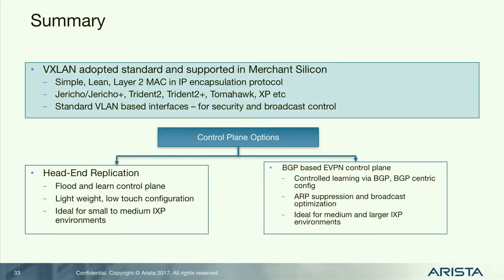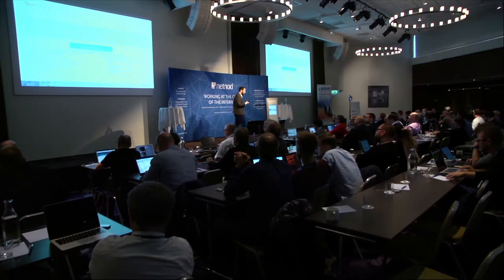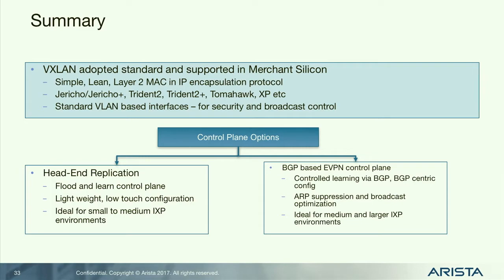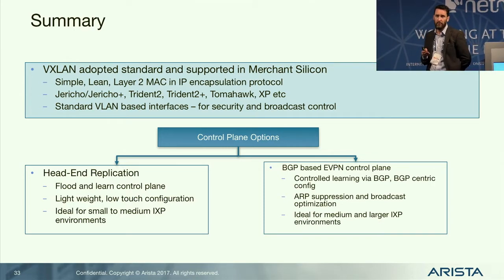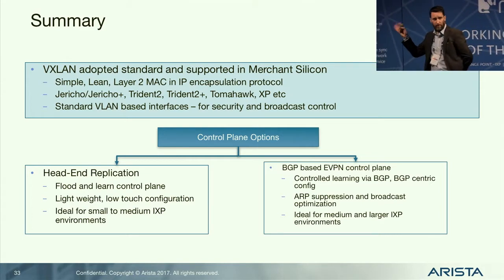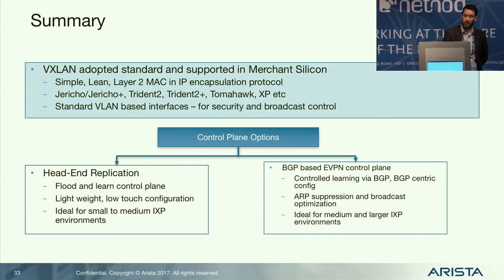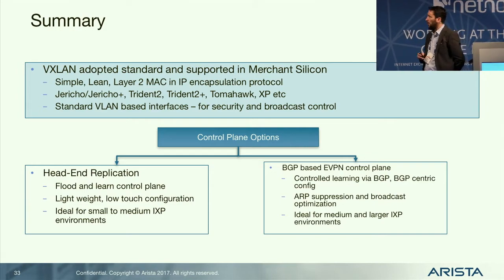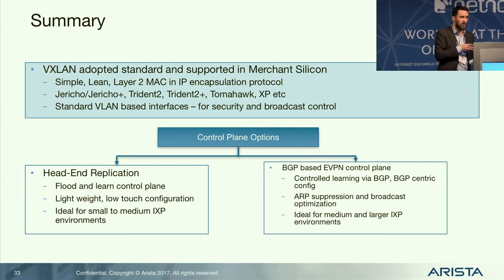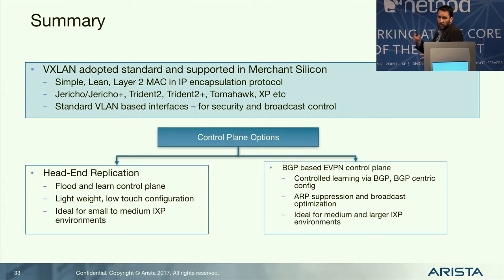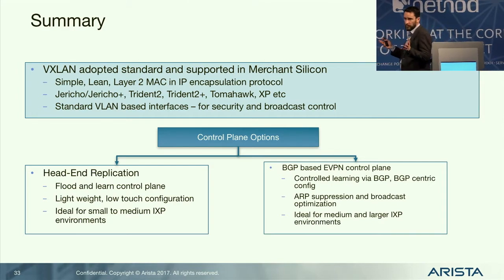To summarize: VXLAN is a simple protocol now adopted across multiple pieces of merchant silicon hardware, supporting both layer 2 and layer 3 (VXLAN routing). The control plane choice comes down to your needs: head-end replication is simple, easy to configure, and low maintenance; EVPN provides great value for scaling and multi-tenant data centers. It's not one or the other — it's based on your environment. Much of the EVPN adoption comes from operators who know BGP and want interoperability between different vendors.